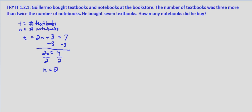So that indicates that he bought two notebooks. So let's check this solution real quick. First, is it reasonable? Is it reasonable that he bought seven textbooks and two notebooks? Yeah, that's reasonable.